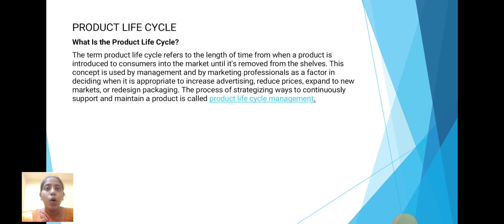Next one is Product Lifecycle. What is a product life cycle? The term product life cycle refers to the length of time from when your product is introduced to consumers in the marketplace until its removal from the shelves. This concept is used by management and marketing professionals as a factor in deciding when it is appropriate to increase advertising, reduce price, expand to new markets, or redesign packaging. The process of a strategic way to continuously support and maintain your product is called product life cycle management.